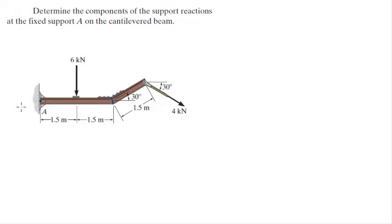So basically, what they're asking you to do is what are the reactions at A, and there are three reactions. A reaction going up, because as you can see, 6K is going down and this 4K is going down and to the right. Since this 4K is going down and to the right, you know that the horizontal reaction at A is going to be going to the left to make up for it. So we have Ax.